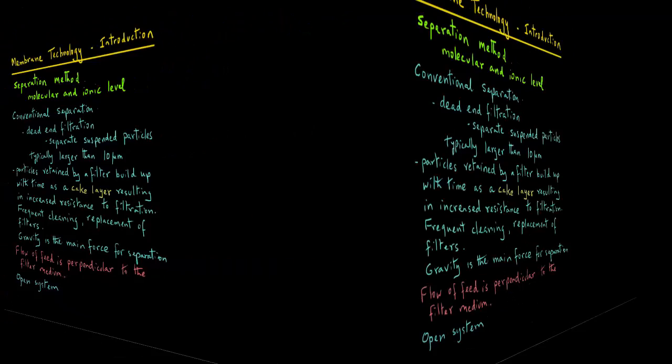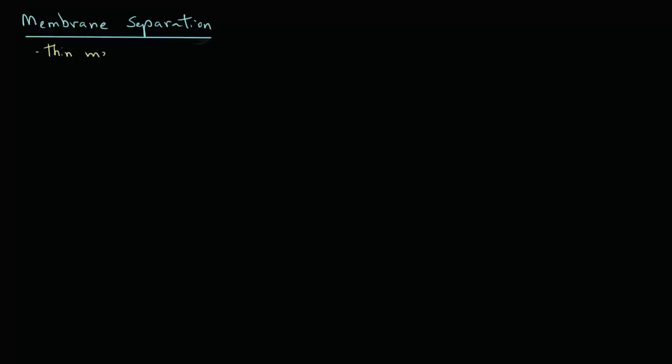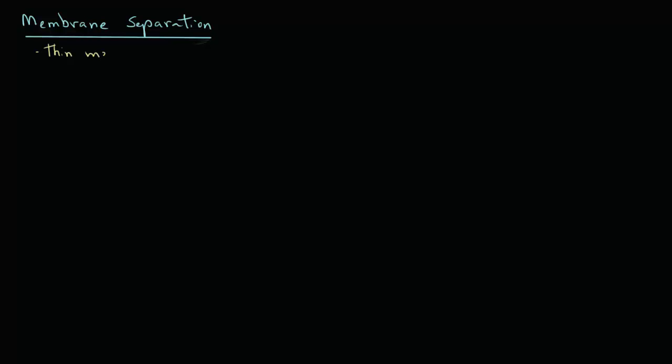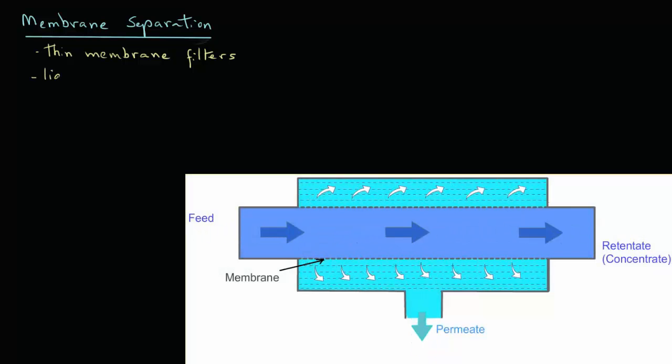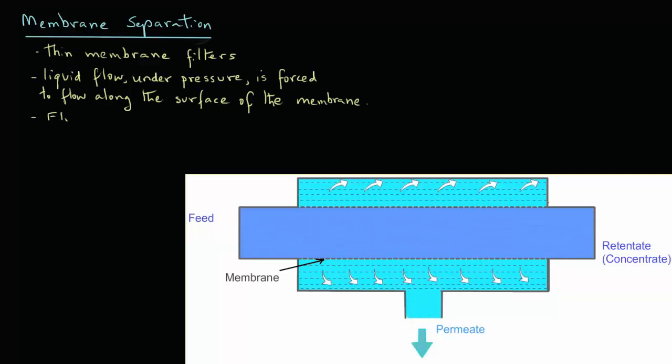Next, we will look at membrane separation systems, where the filters that are used are very thin membrane filters. The liquid flows under pressure and it is forced to flow along the surface of the membrane. This is in contrast to the dead-end filtration that we just saw, where the flow was in a perpendicular direction to the surface of the filter.